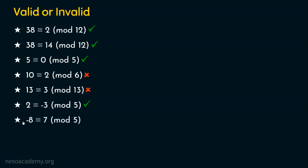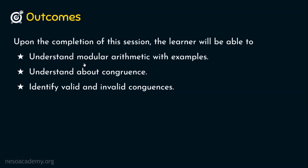Finally, two exercises for you: Is minus 8 congruent to 7 mod 5 valid or invalid? Is minus 3 congruent to minus 8 mod 5 valid or invalid? Please work these out and share your answers in the comment section. I hope you now understand modular arithmetic with examples, congruence, and how to identify valid and invalid congruences. Thank you for watching.